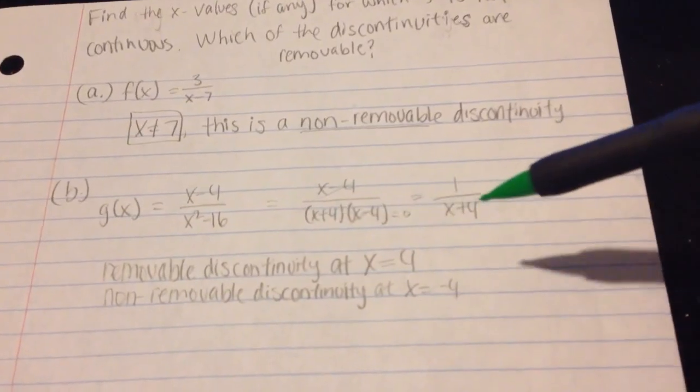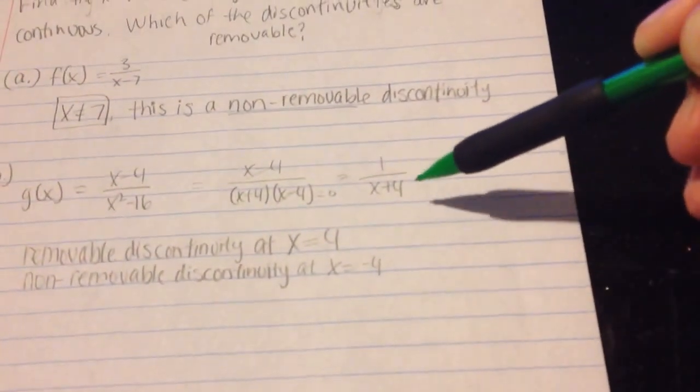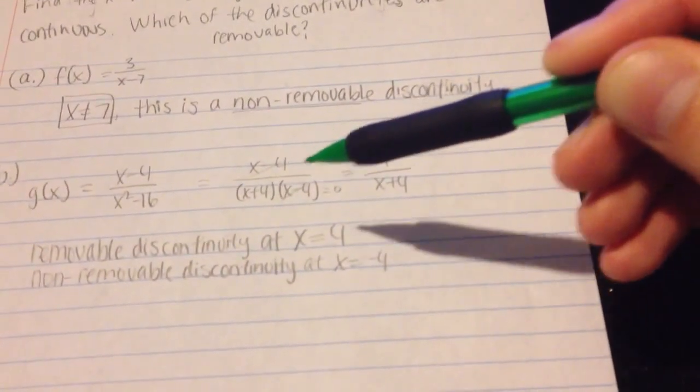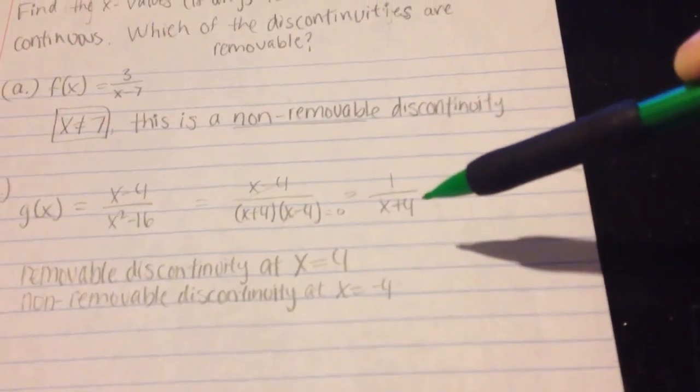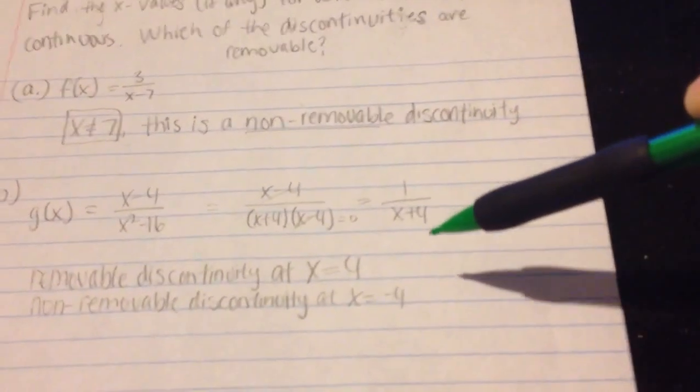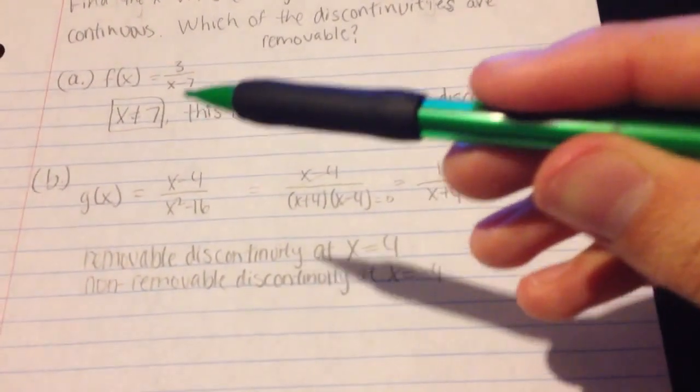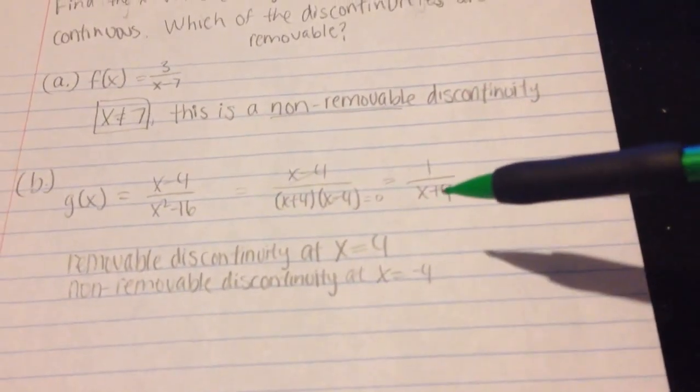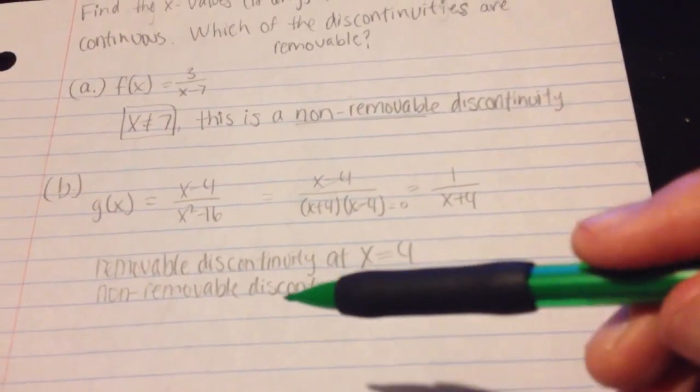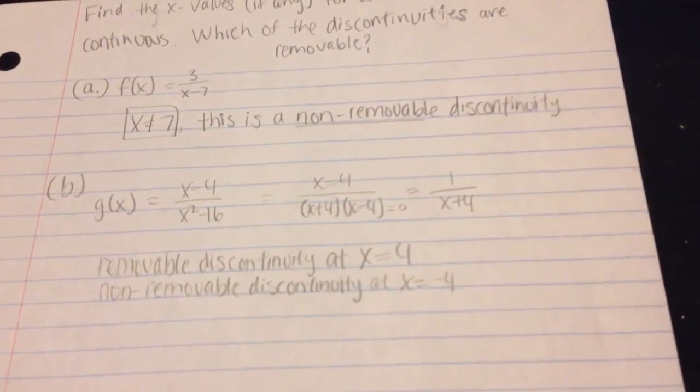However, this one right over here, when you're left with this equation over here after the x minus 4 has been canceled out, you'll be left with an x plus 4 on the bottom. And again, just like up here, how 7 made that one 0, negative 4 will make this 0, and that would be a non-removable discontinuity.